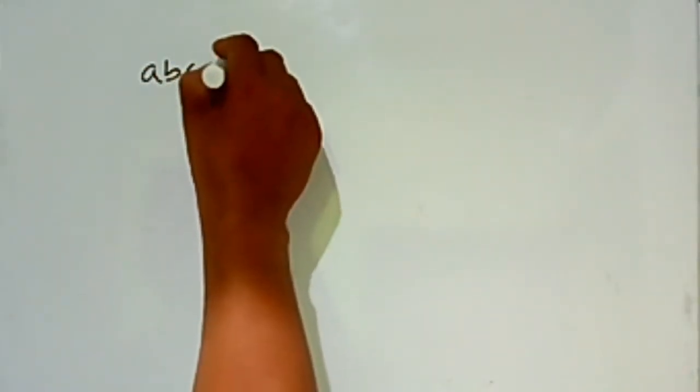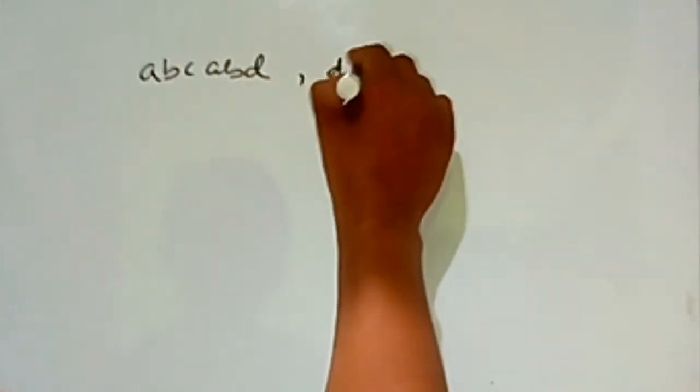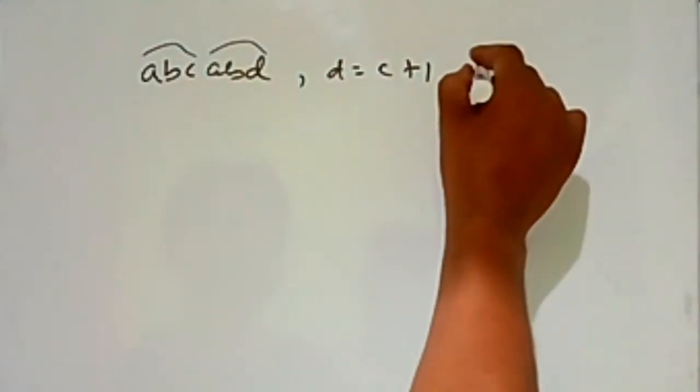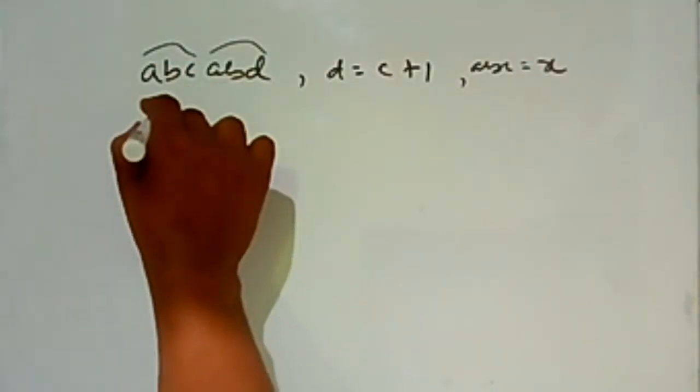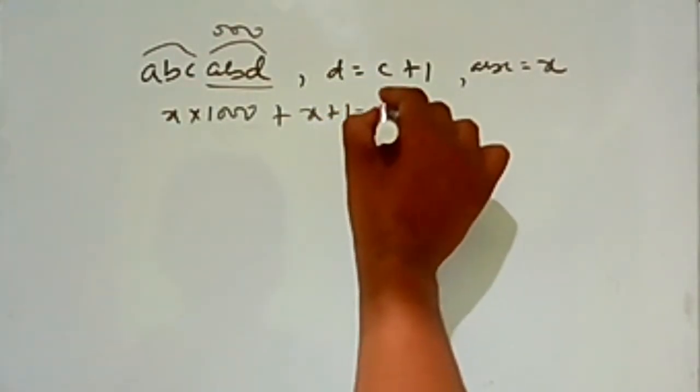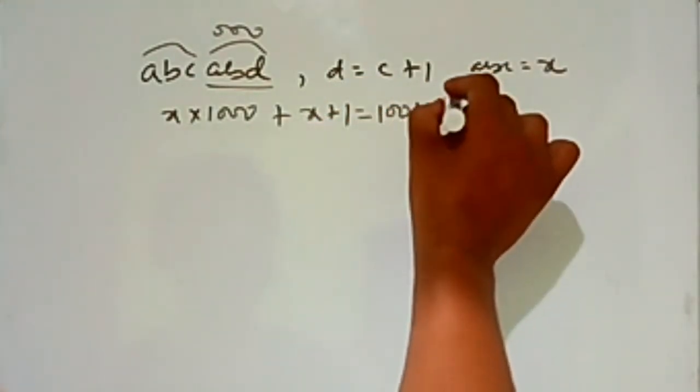Let the number be abc,abt — that is, the first three digits are a,b,c and the last three digits are a,b,t, where t = c+1. Let abc = x. Then the six-digit number equals x×1000 plus (x+1), which equals 1001x + 1.